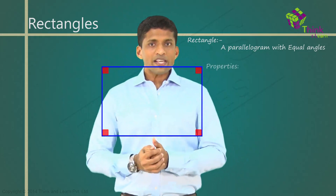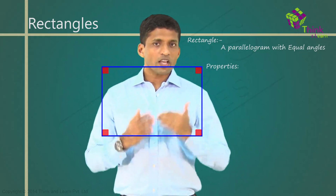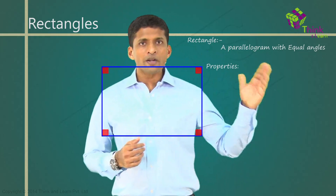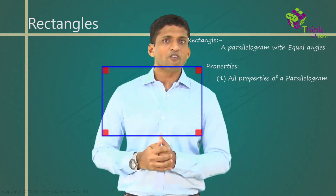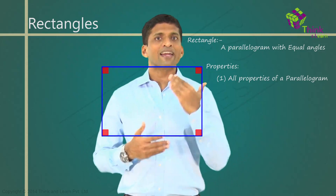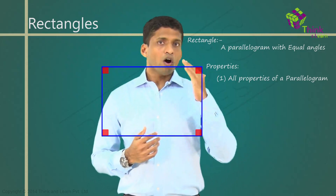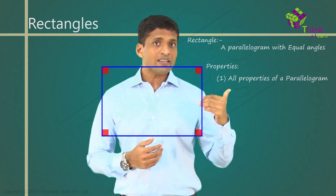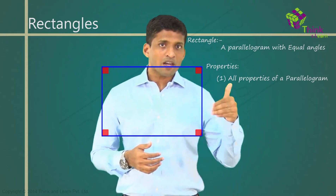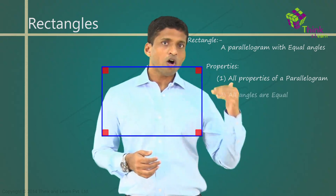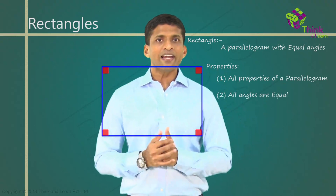Now, properties-wise, for a rectangle, what are the properties? All properties of a parallelogram, right? Rectangles will have all the properties of a parallelogram, because finally it's a parallelogram. Apart from that, why is it a special parallelogram? Because of these extra properties, which is all the angles are equal and equal to 90 degrees.